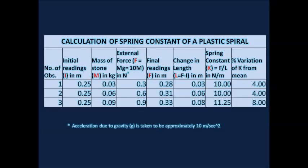This is the length of the spring, in our case the spiral. The mass is converted in terms of kilograms, so 30 grams becomes 0.03 kilograms, similarly 60 grams becomes 0.06 kilograms, and 90 grams becomes 0.09 kilograms.